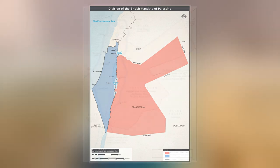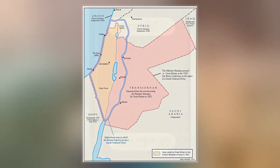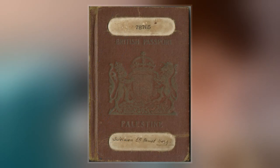During the First World War, an Arab uprising against Ottoman rule and the British Empire's Egyptian Expeditionary Force under General Edmund Allenby drove the Turks out of the Levant during the Sinai and Palestine campaign.